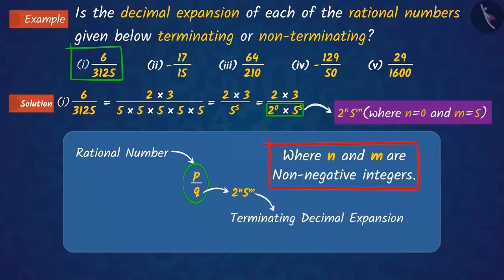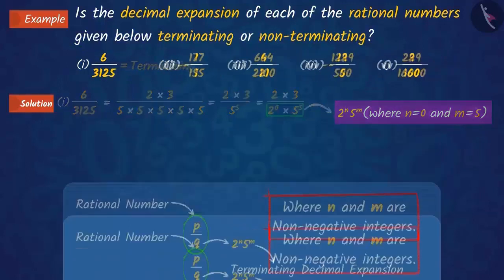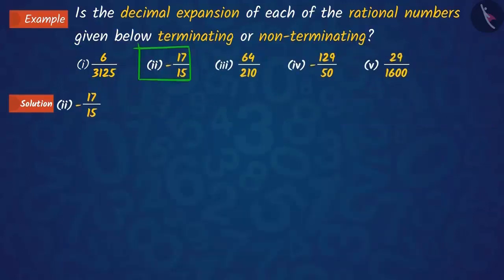So, the decimal expansion of this number is also terminating. Let us now discuss the second rational number, 17 upon 15.